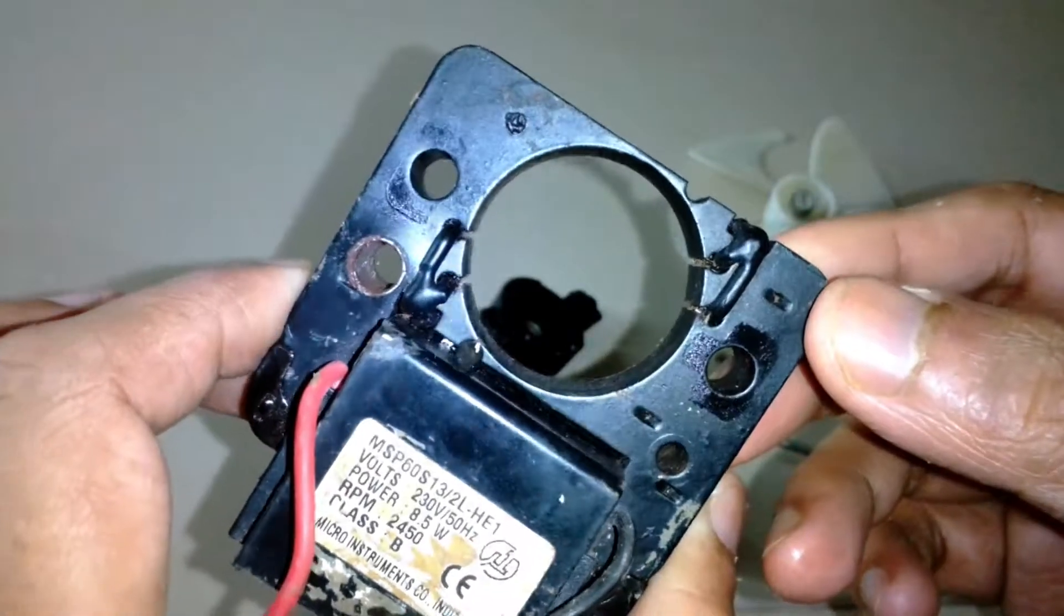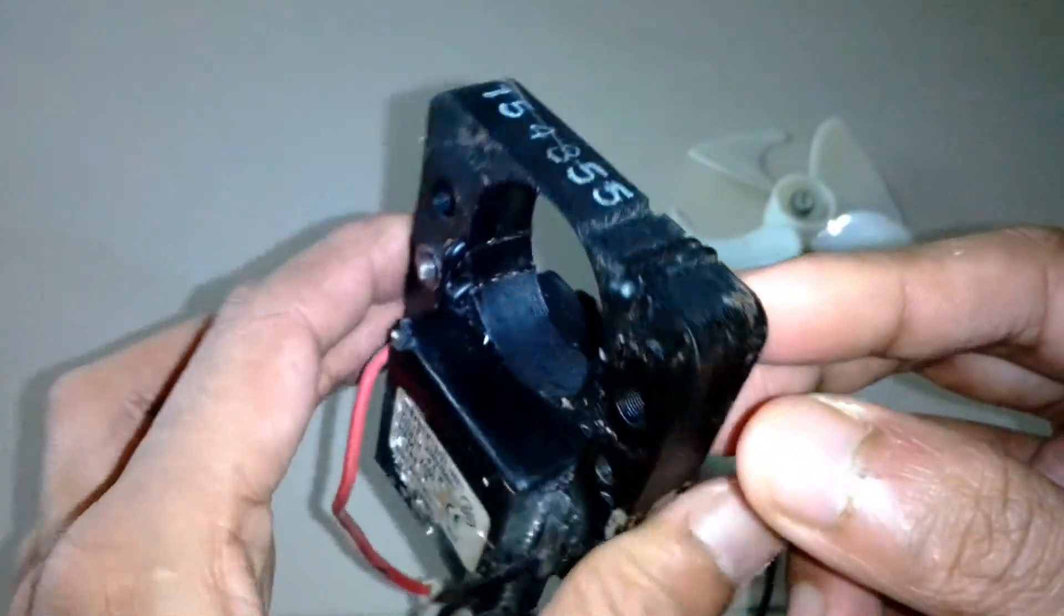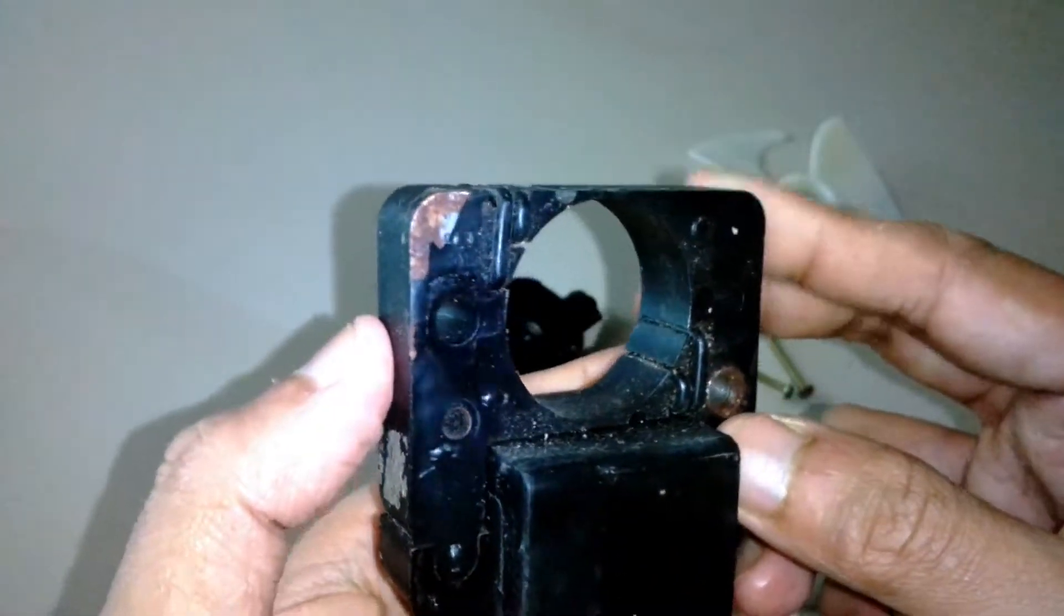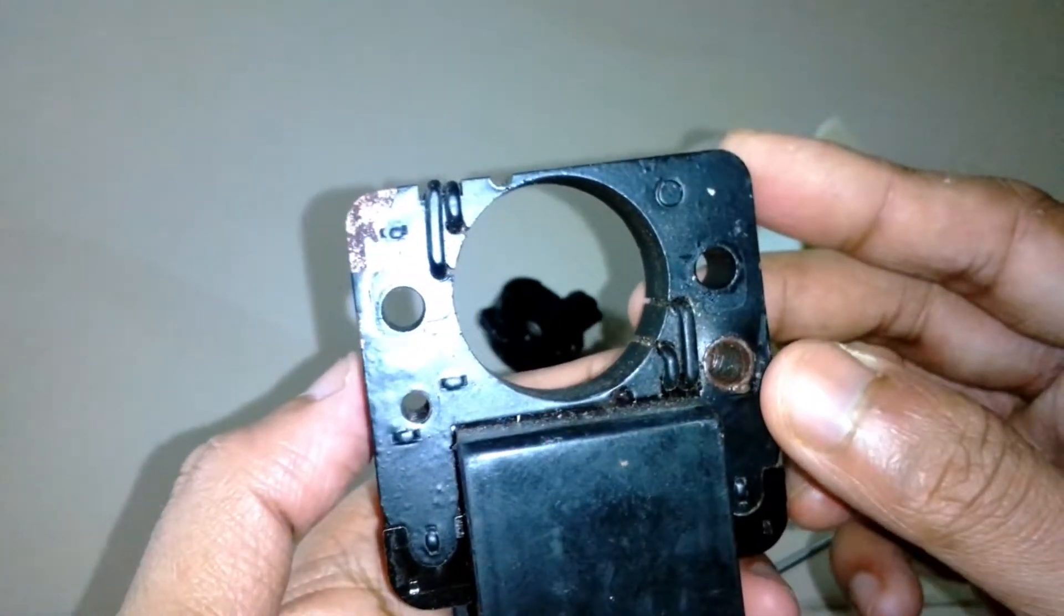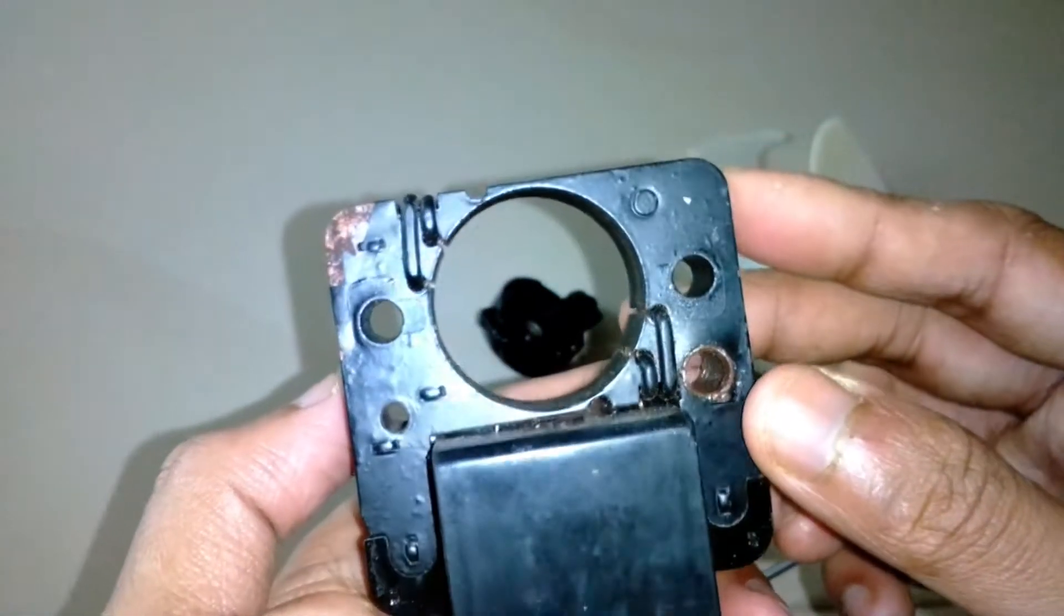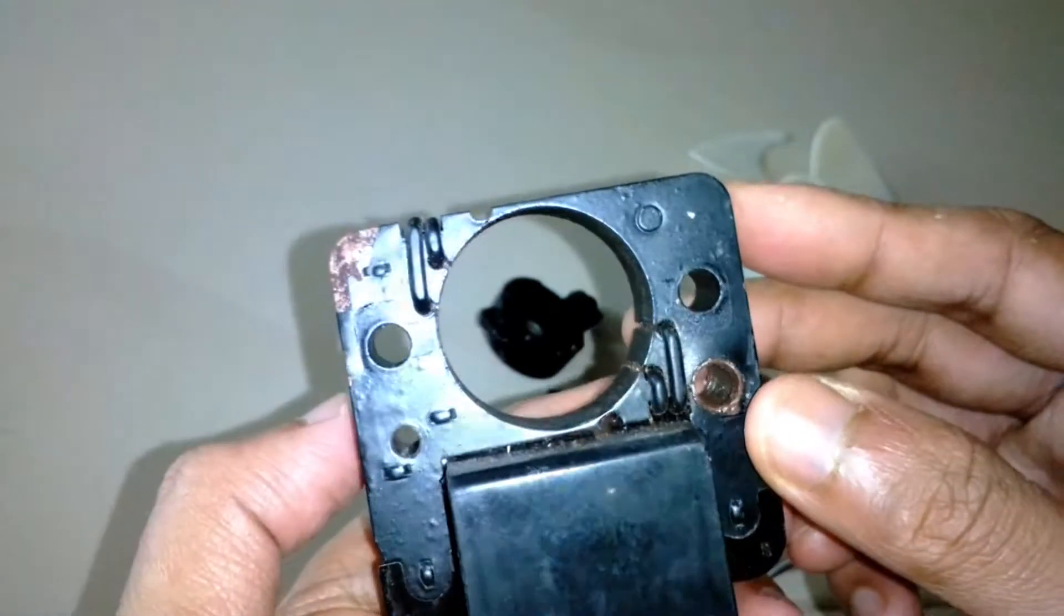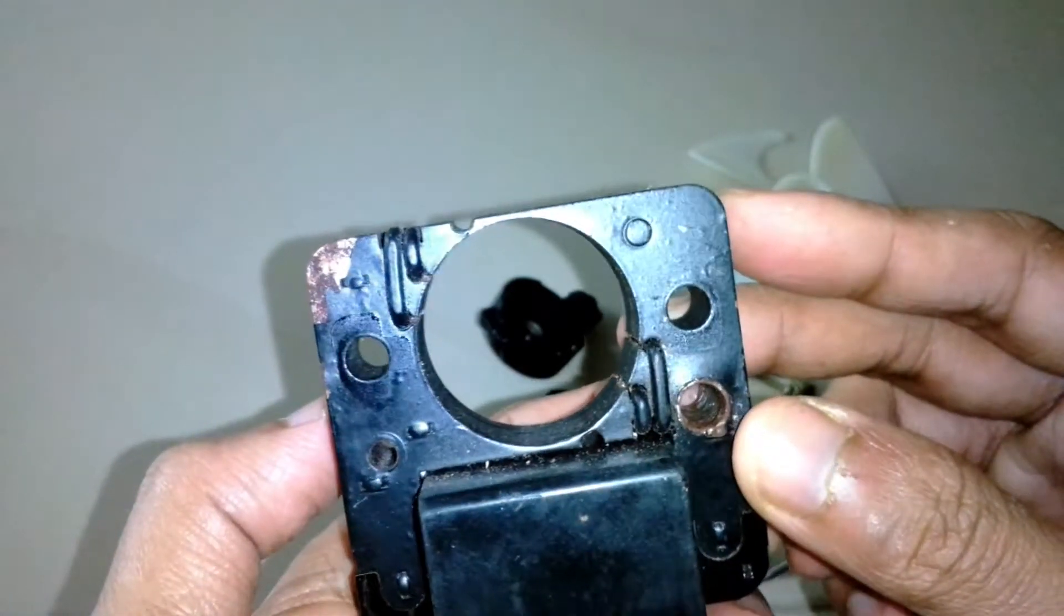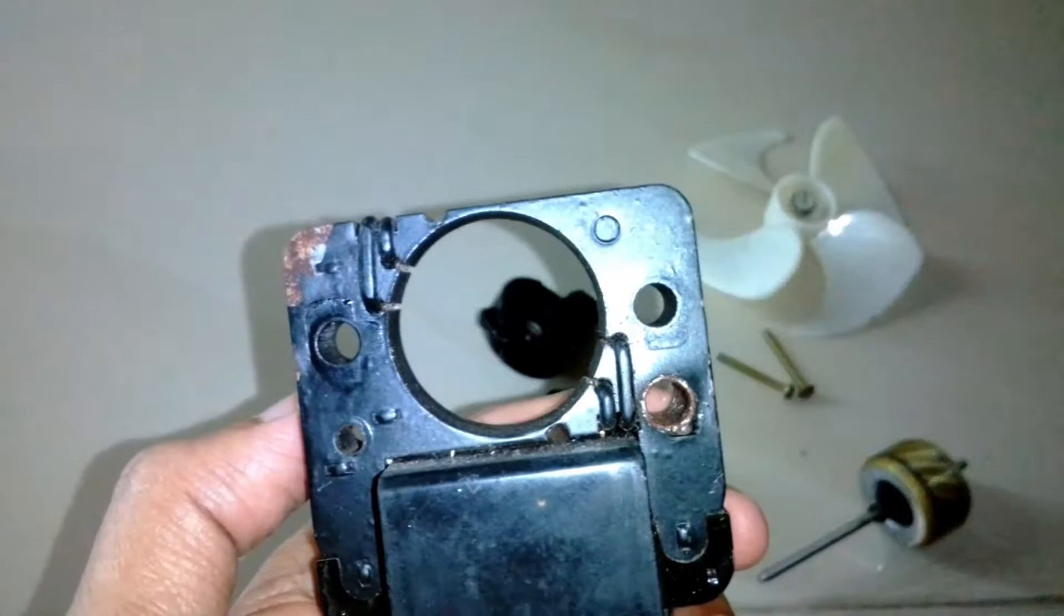In other types of motors, such as split phase induction motors, the phase shift is generated with a capacitor. Here the phase shift is generated with these copper rings, and that's why they're called shaded pole motors.